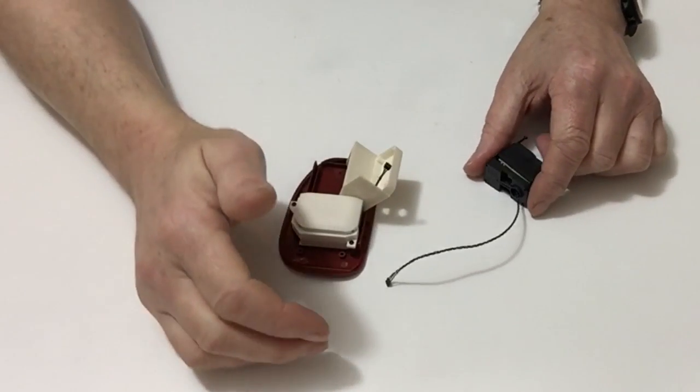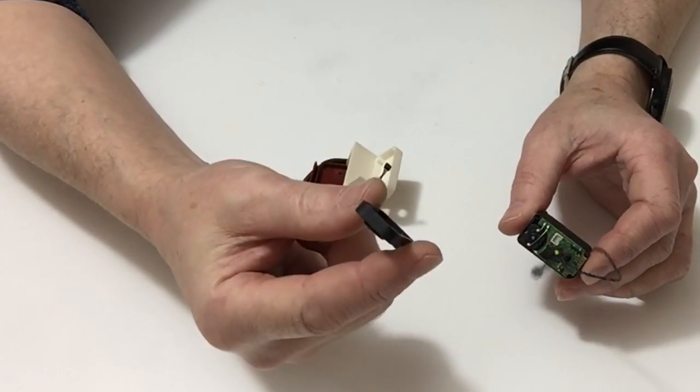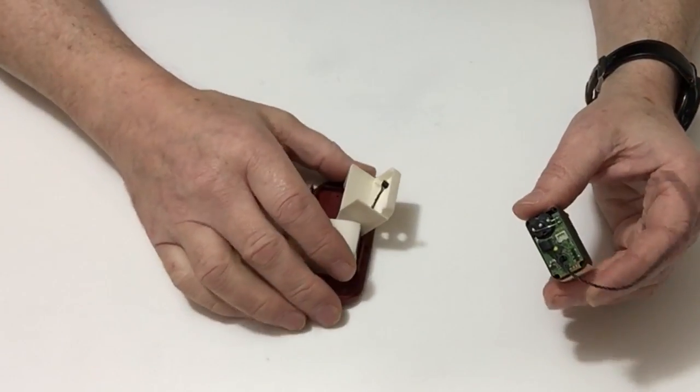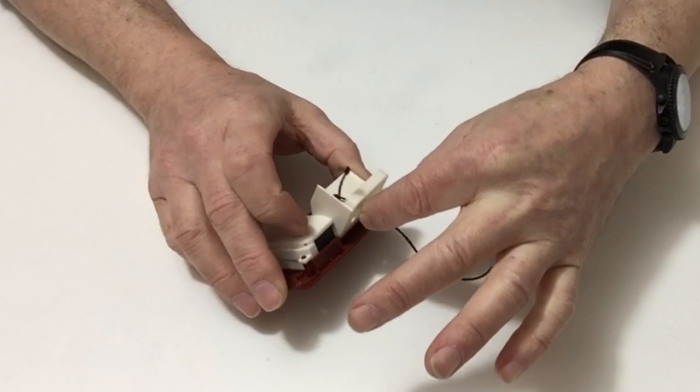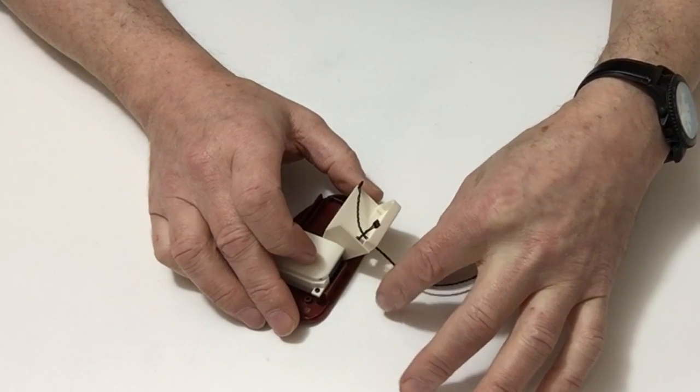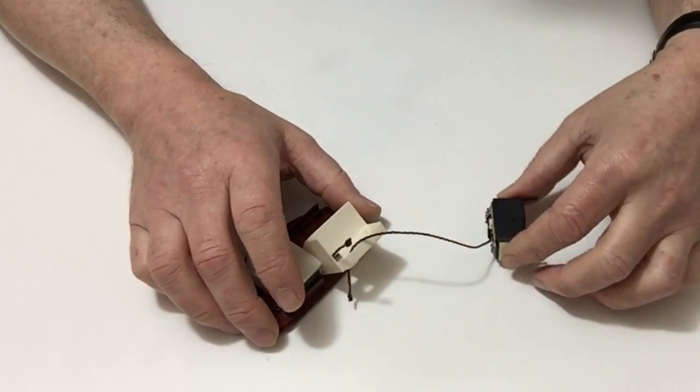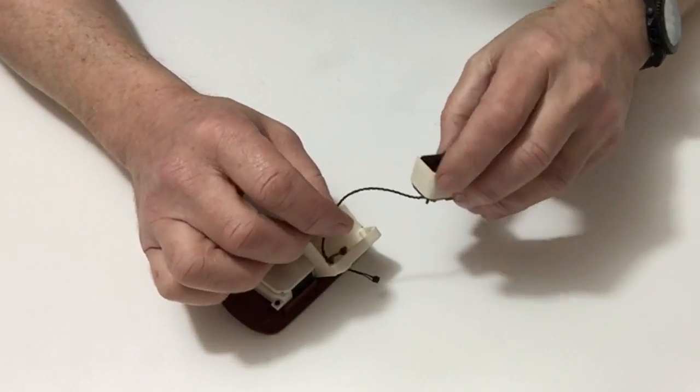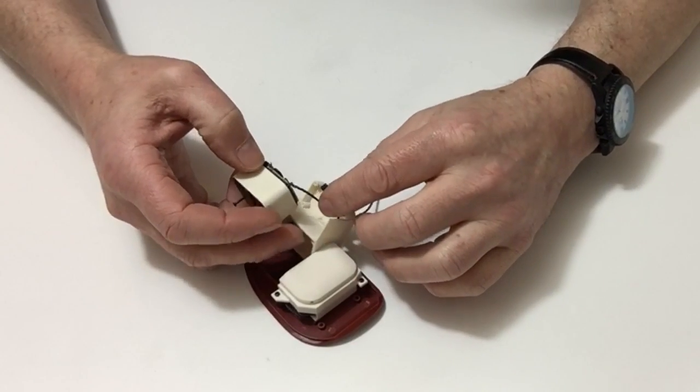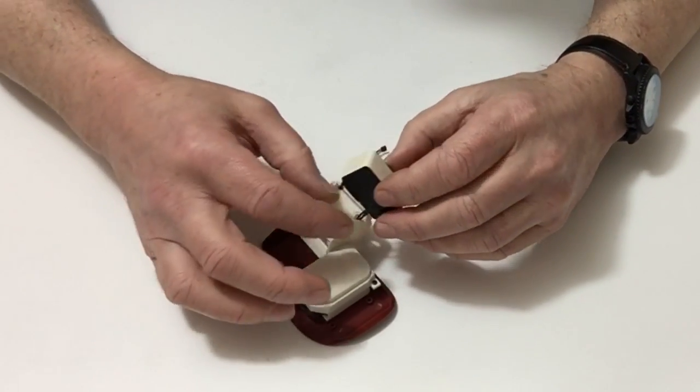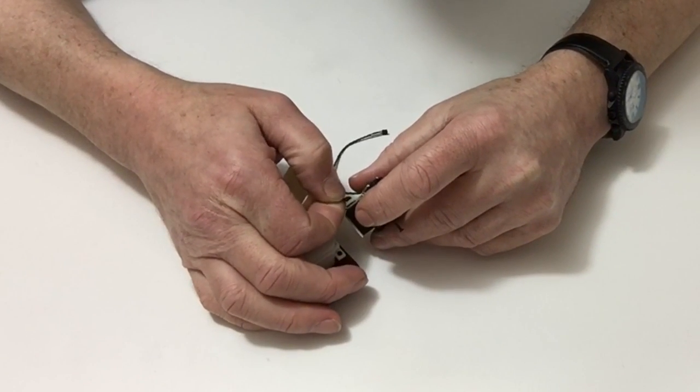Next, take the wired and taped servo from stage 26 and remove the cover. Then pass the cable through the hole like so. Once you've done that, push that through and then carefully connect up this wire that we pushed through earlier onto the back of the servo, making sure that you have got them the right way round.